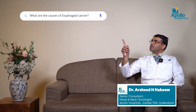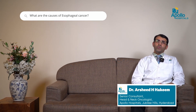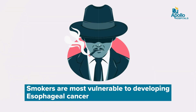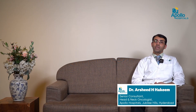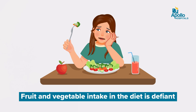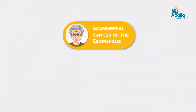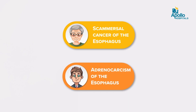What are the causes of esophageal cancer? The most common risk factor is smoking. Those who are smokers are at very high risk of getting esophageal cancer. People whose diet is deficient in vegetables and fruits are also likely to get it. Elderly people above 60 are more likely to get squamous cell cancer of the esophagus, while people around 50 and above are more likely to get adenocarcinoma of the esophagus.